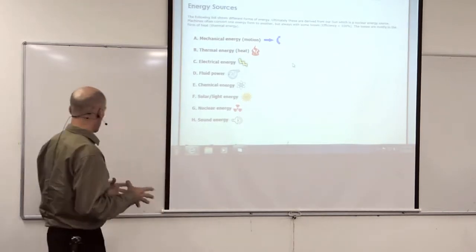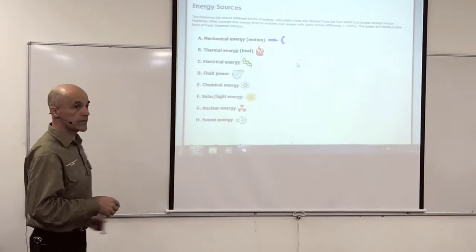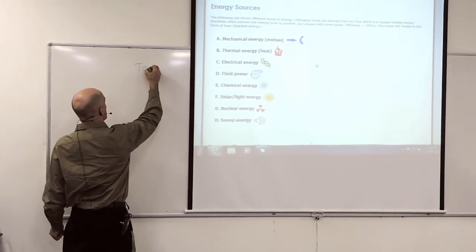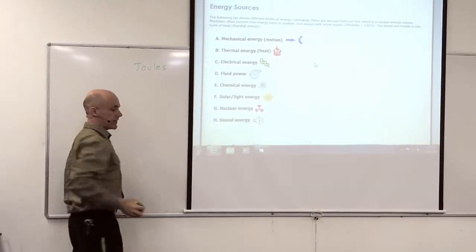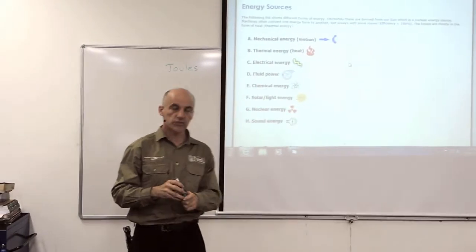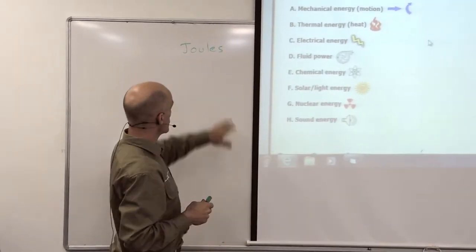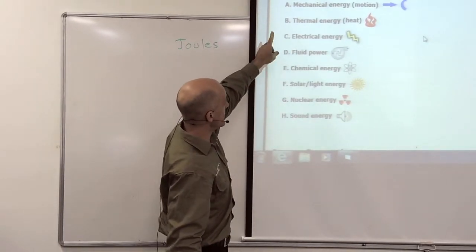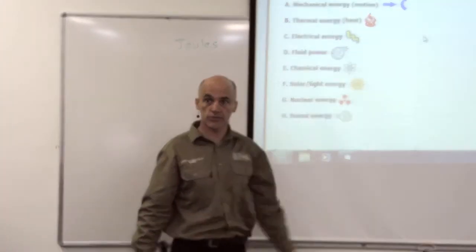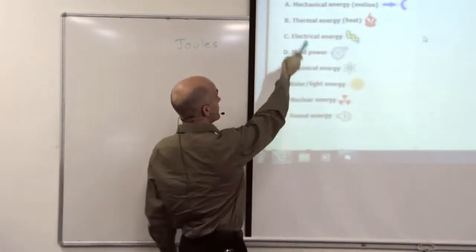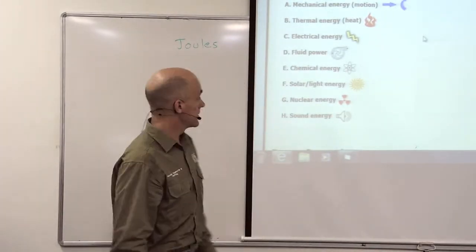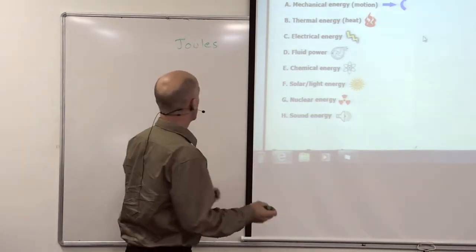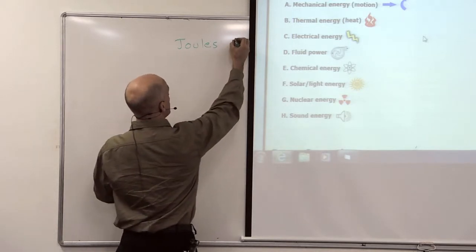The interesting thing about all the different types of energy is we can measure them. When we measure energy, we measure in joules, which is after a guy by the name of Joule. Joules are the same regardless of what type of energy you're using. All energy is measured in joules. We give it the symbol J for joule, but often in engineering we're dealing with bigger than a joule, so we often work in kilojoules.